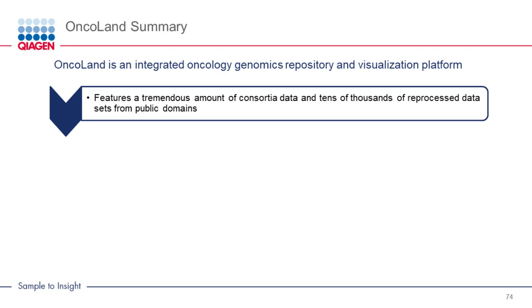In summary, Oncoland holds tremendous amounts of curated cancer genomic data sets from the public domain. The high-level enriched metadata enables meaningful connections between omic data and sample and subject-level data. Users can build custom lands with internal and external data, combining data from different sources to enable rapid data expansion. Oncoland also provides advanced analytic tools, allowing users to navigate data across multiple platforms and get meaningful biological and clinical insights in minutes.